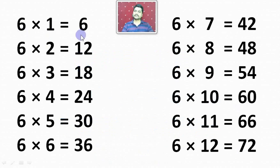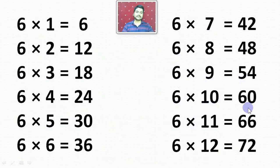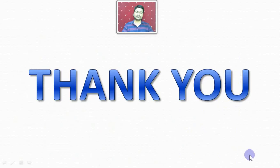6 1's are 6. 6 2's are 12. 6 3's are 18. 6 4's are 24. 6 5's are 30. 6 6's are 36. 6 7's are 42. 6 8's are 48. 6 9's are 54. 6 10's are 60. 6 11's are 66. 6 12's are 72. Thank you.